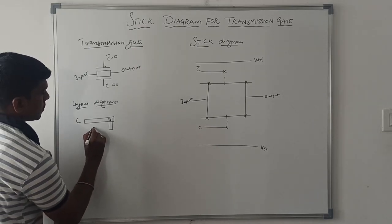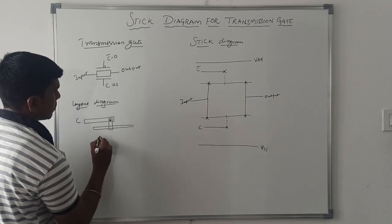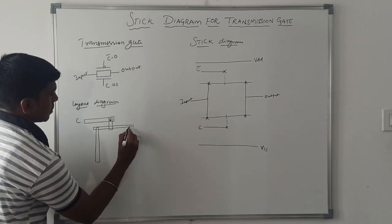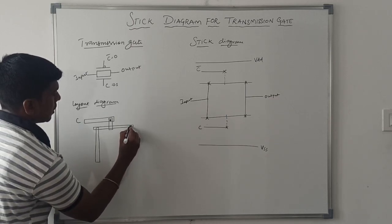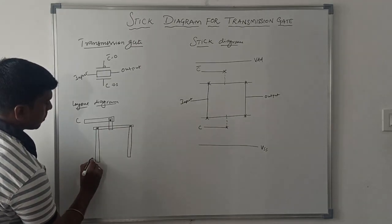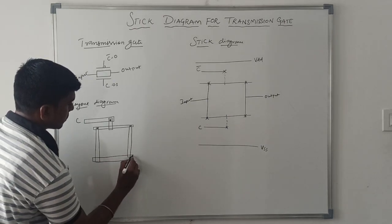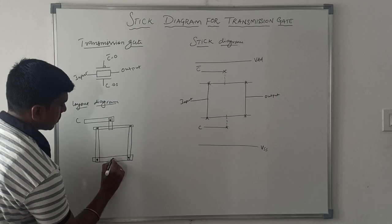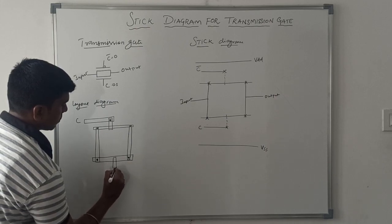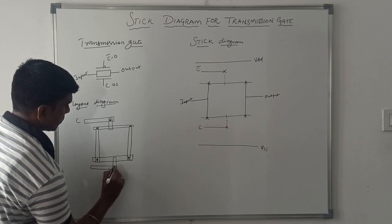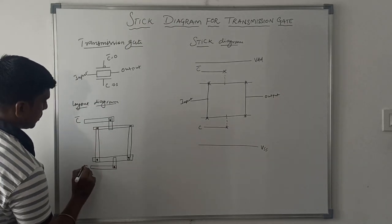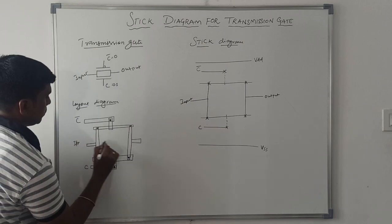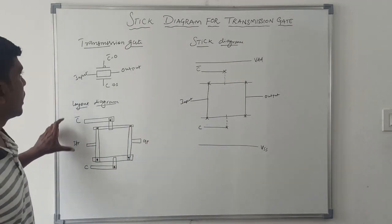In the layout diagram, this is the input C. The top portion has the PMOS transistor. The dotted portions are called metal contacts. This one is C bar, this one is C bar, and this one is C. This one is the input and this one is the output. So it's the layout diagram for the transmission gate.